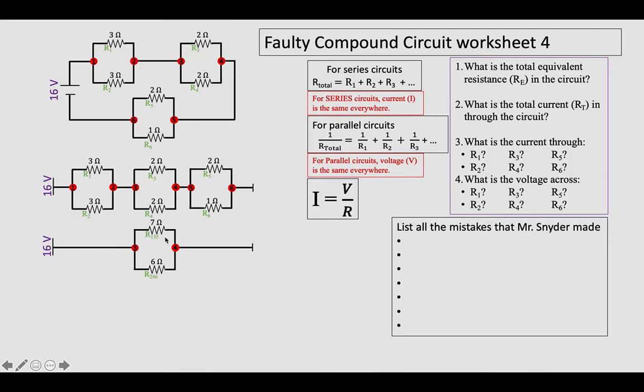And now these two are in parallel, so I can simply add those up. Seven plus six is thirteen. So my equivalent resistor is thirteen ohms, I have a sixteen volt battery, and now I can use Ohm's law to solve for current and get that there's one point two amps flowing through this circuit.